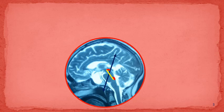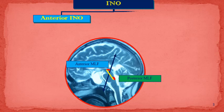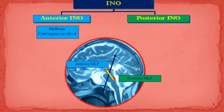The MLF is divided into an anterior part, which is located in the midbrain, and a posterior part, which is located in the pons. Hence, INO is also divided into anterior INO and posterior INO. In anterior INO, the lesion is in the midbrain and convergence is involved, and in posterior INO, the lesion is in the pons and convergence is spared.